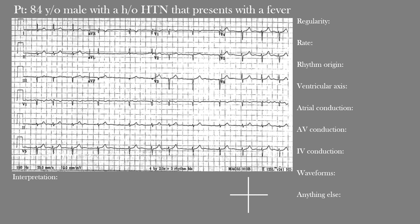Our 84-year-old male with a history of hypertension presents with a fever and this EKG. First off, what is the regularity of this rhythm? On first impression, you probably notice that the rhythm appears irregular — not only irregular, but irregularly irregular. Let's look at why that is.